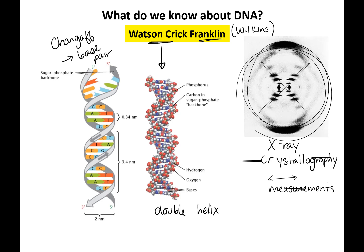When Watson and Crick put together their ball-and-stick model, they realized that if A pairs with T and G pairs with C, and the strands run anti-parallel, they fit perfectly into the helical structure. Using data from Franklin, Chargaff, and knowledge of DNA's phosphate-sugar-base composition, they published their model in 1953.